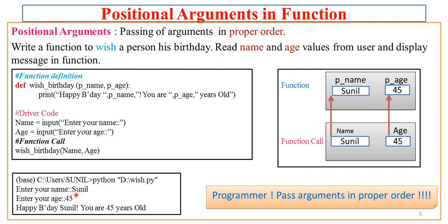So in positional arguments, the order of arguments at the time of passing to the function is important. If you change the order, it will not be a problem of Python — it is the programmer's problem for passing arguments in the wrong way.